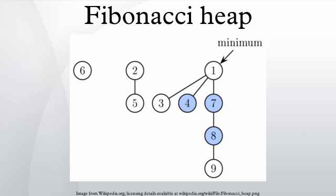As mentioned above, merge is implemented simply by concatenating the lists of tree roots of the two heaps. This can be done in constant time and the potential does not change, leading again to constant amortized time. Operation insert works by creating a new heap with one element and doing merge. This takes constant time, and the potential increases by one, because the number of trees increases. The amortized cost is thus still constant.